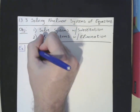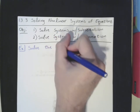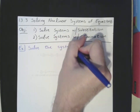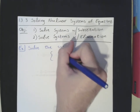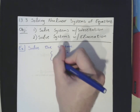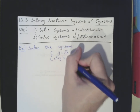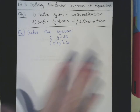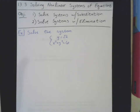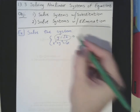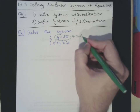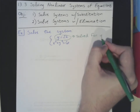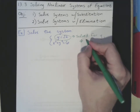Our first example is to solve the system: y equals the square root of x, and x squared plus y squared equals 6. Since we're pretty familiar with substitution and elimination, I'm going to talk about things you can notice to decide which method to use quickly. Since this first equation is already solved for y, substitution is going to be the faster and easier method to choose.